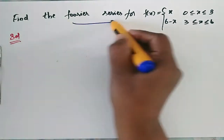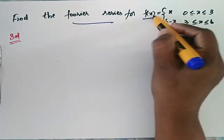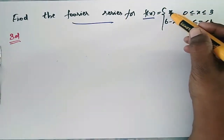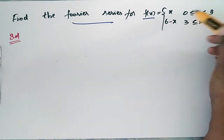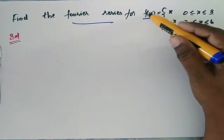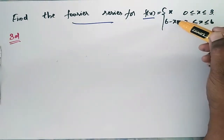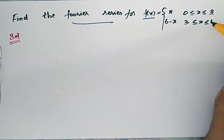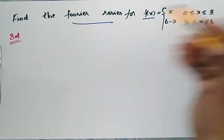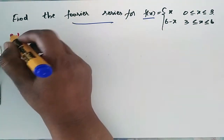Find the Fourier expansion of f(x) = x when x is from 0 to 3, and f(x) = 6 minus x when x is from 3 to 6. Now let us look at the solution.